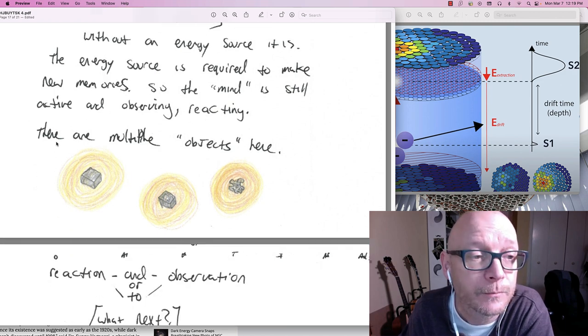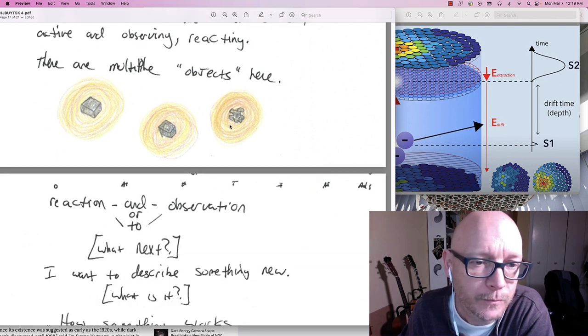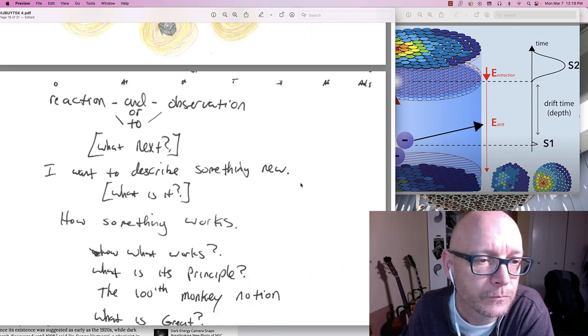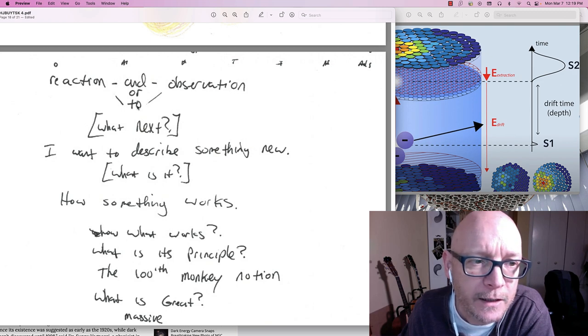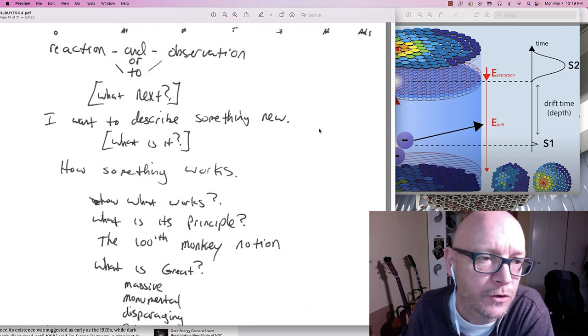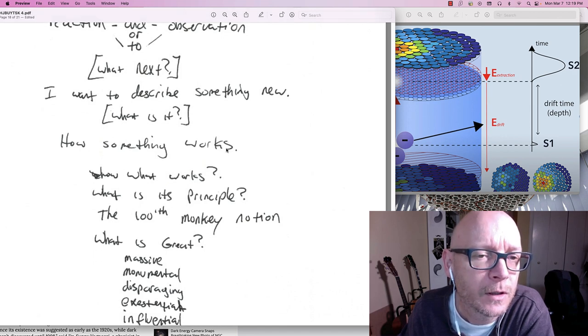What is its principle? The hundred monkey notion. What is created? I question. Massive. Like massive. The creation of a memory. A formulation. An execution of an idea or events.